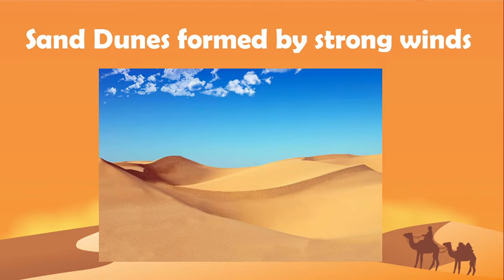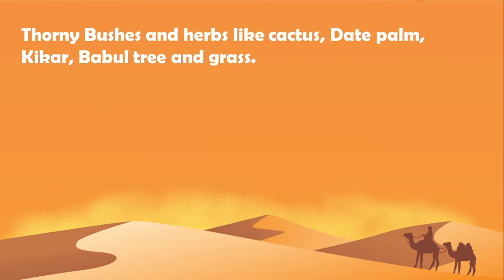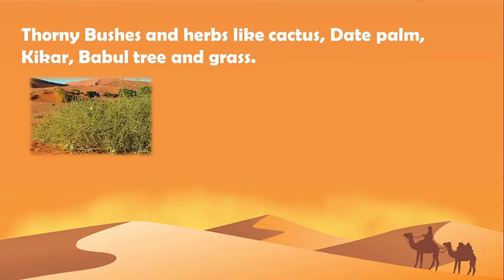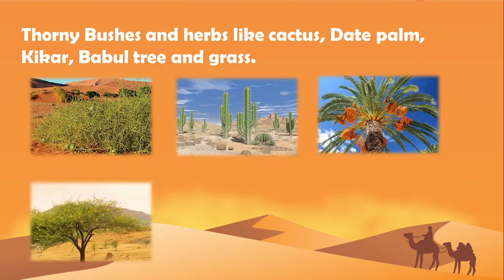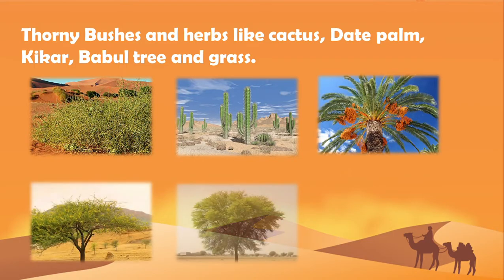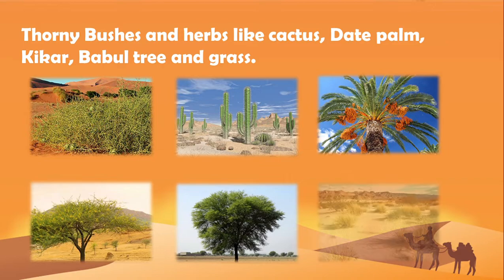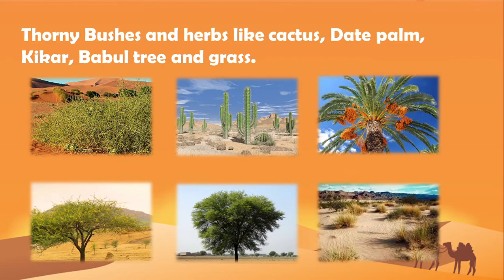Plant life exists only in the form of thorny shrubs and herbs like cactus, date palm, kiker, babul, and grass. These trees are found around in these places.